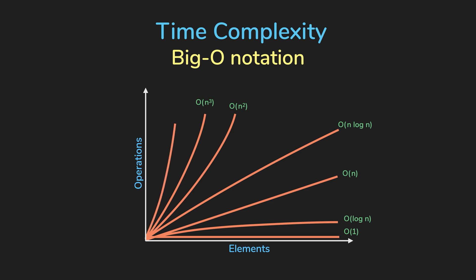Exponential time complexities, O of two to the N, will multiply the number of operations whenever there is an additional input. Think about the number of attempts we need to take to guess three digit password and four digit password. We increase the password length by one, but the number increased from 1000 to 10,000.